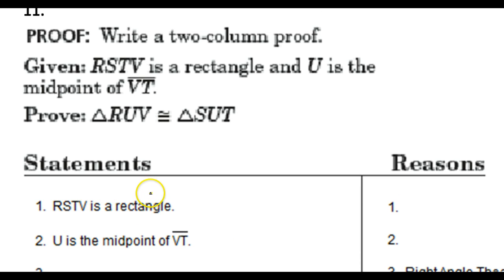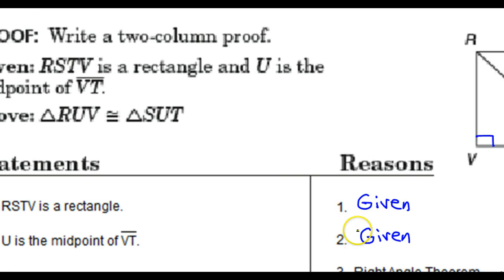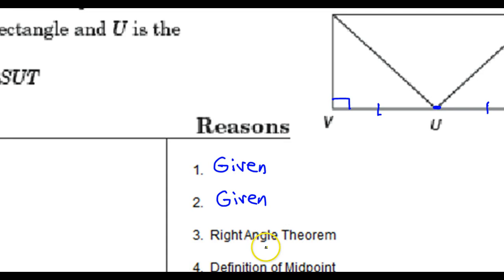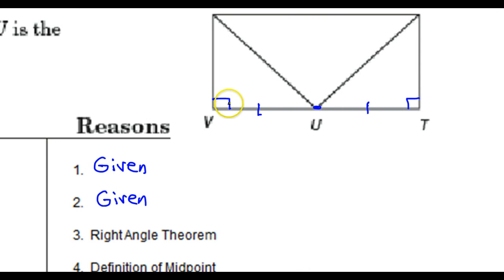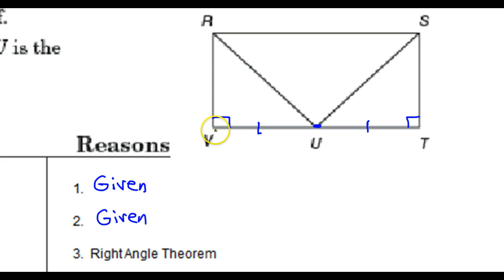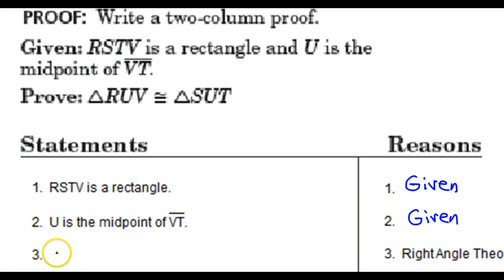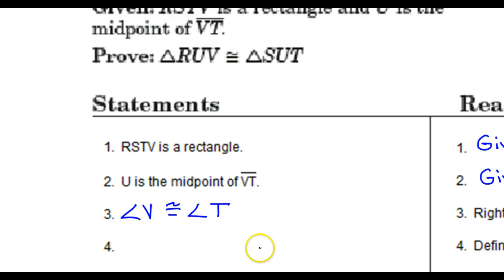So let's see what they say. First of all, RSTV is a rectangle. That was given, obviously. Now, U is the midpoint of VT. That was also given. What do they say next? The right angle theorem. The right angle theorem says that all right angles are congruent. So they must want us to say that angle V is congruent to angle T, because that would require the right angle theorem. All right angles are congruent. So let's say that angle V is congruent to angle T.